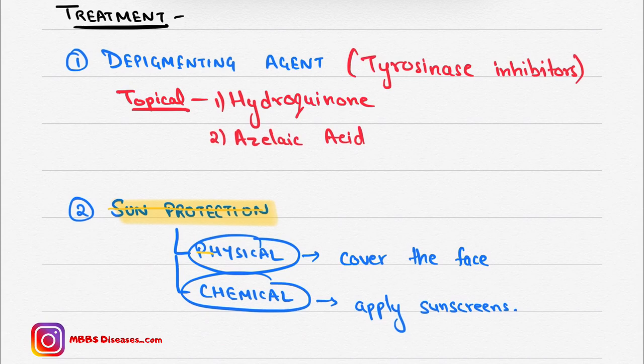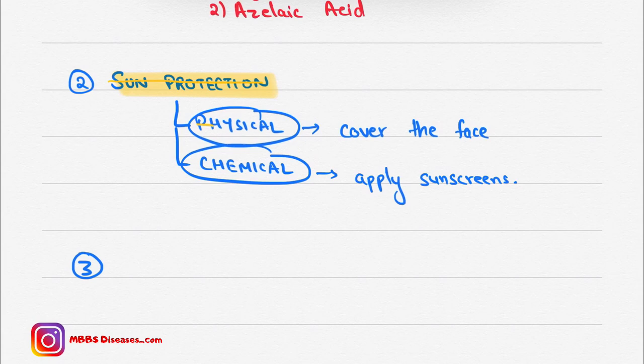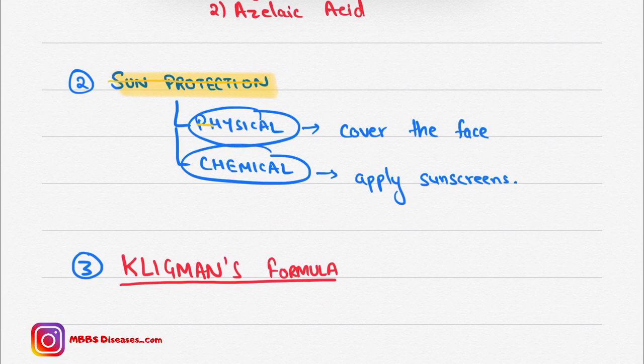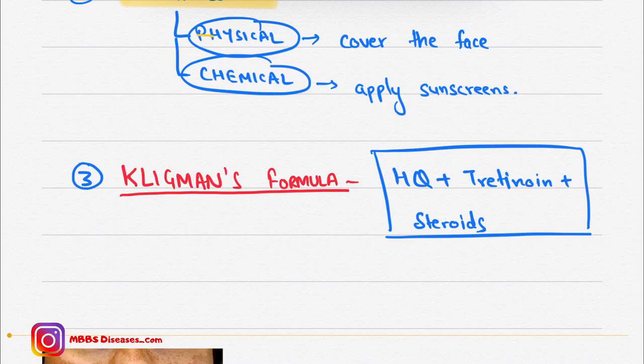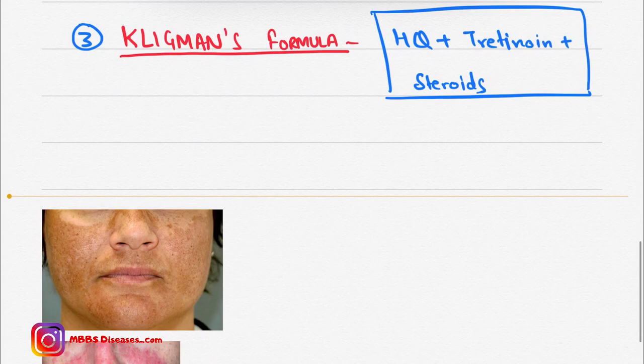Another main part for treatment is Kligman's formula. We can apply it on the lesion. What does it contain? It contains three things: hydroquinone plus tretinoin plus steroids. These three things form Kligman's formula.